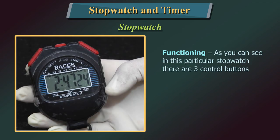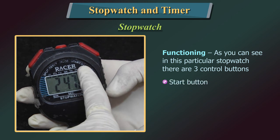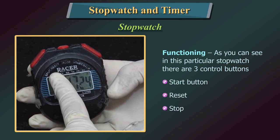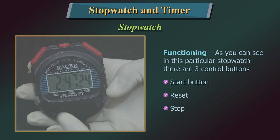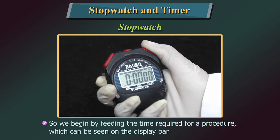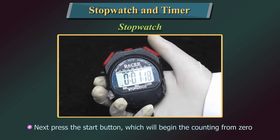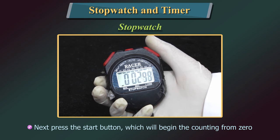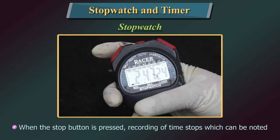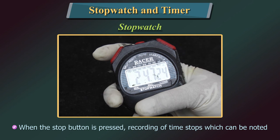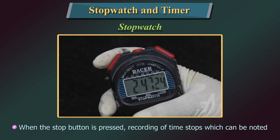As you can see in this particular stopwatch, there are three control buttons: the Start button and the Stop button. We begin by pressing the Start button, which begins counting from zero. When the Stop button is pressed, recording of time stops and the elapsed time can be noted.